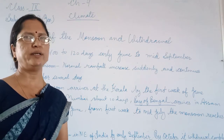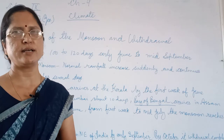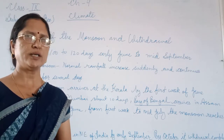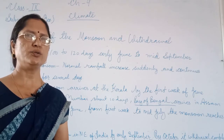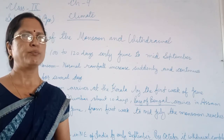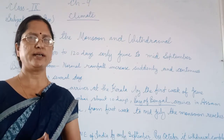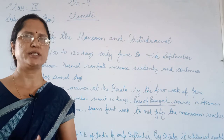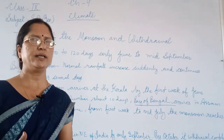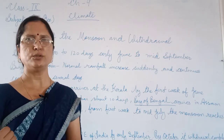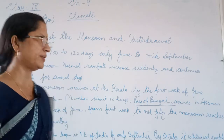The monsoon enters India through three oceans: the Indian Ocean, the Bay of Bengal, and the Arabian Sea. These are the ocean branches entering India, bringing weather starting from early June to mid-September.